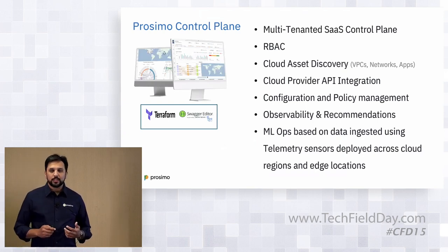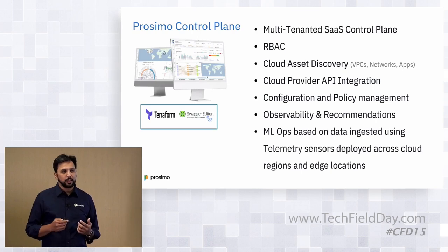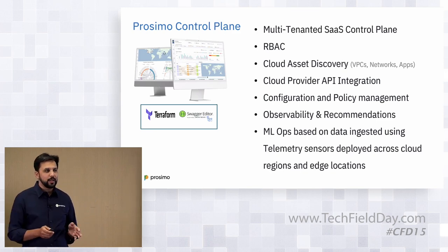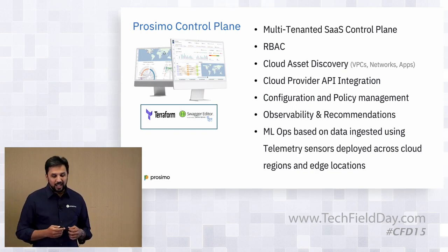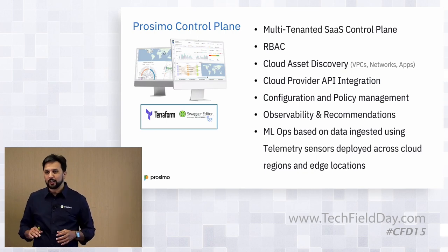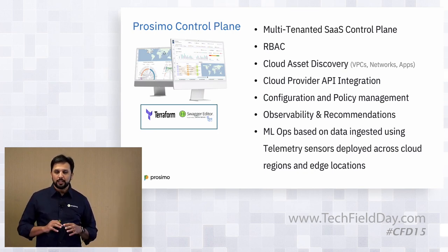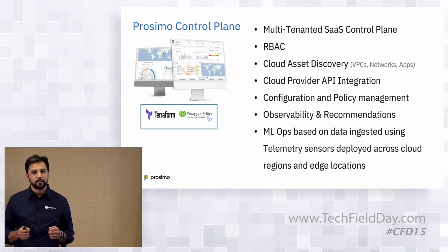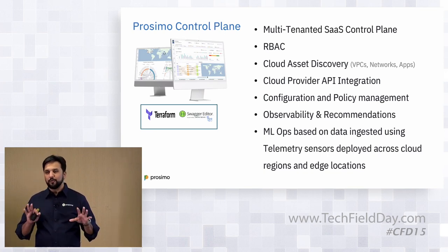The SaaS control plane is multi-tenanted. When a customer subscribes, they get their own URL and their own tenant, fully RBAC'd with different permission levels — who can access what portion of the control plane. It performs cloud asset discovery: taking API permissions from your IAM roles, it gives you a full discovery of all assets running in that cloud. If you have 400 VPCs deployed in AWS, it discovers all those VPCs, all the IP subnets configured under them, and displays them in a visualization map.